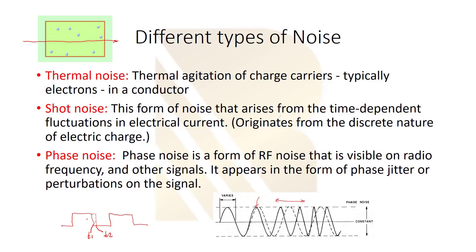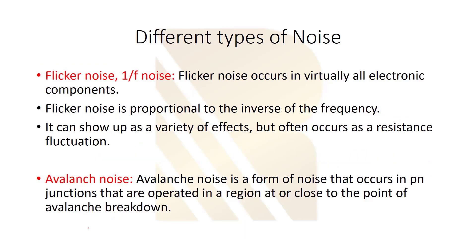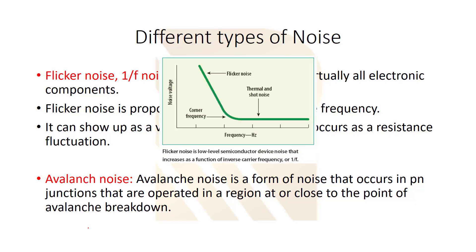The next one is flicker noise. Flicker noise occurs in virtually all electronic components. The most important thing is that flicker noise is proportional to the inverse of frequency. As you see here, flicker noise changes with frequency. Basically, it's proportional to 1 over f. That's why we call it 1/f noise.